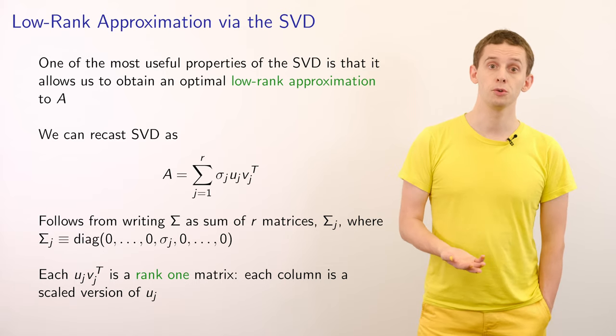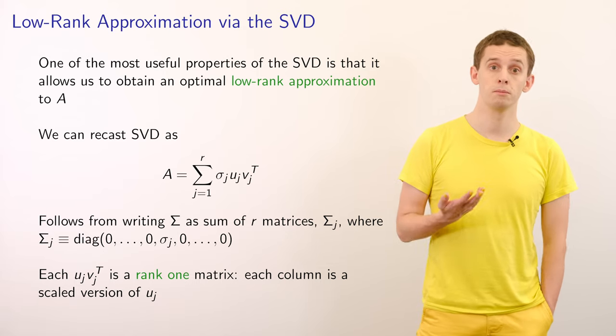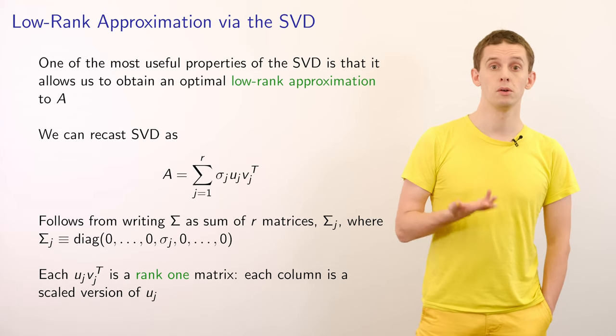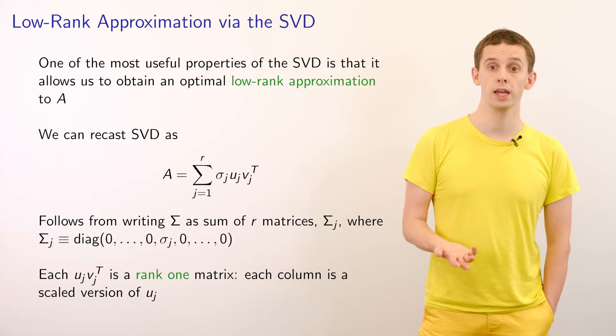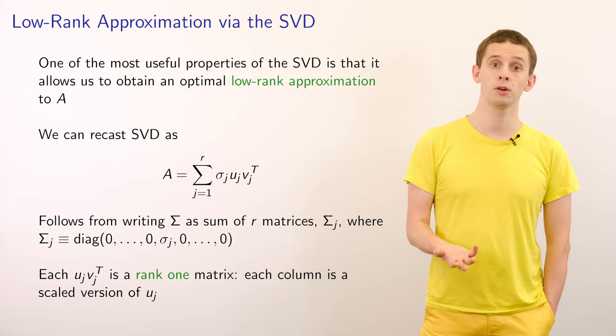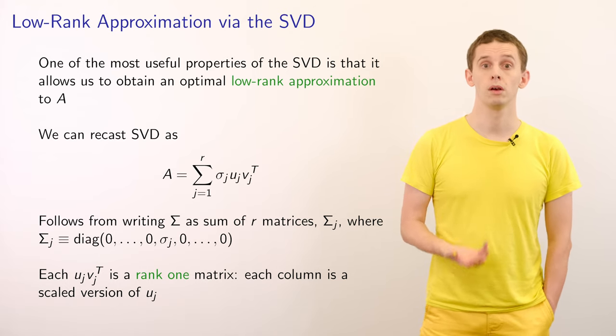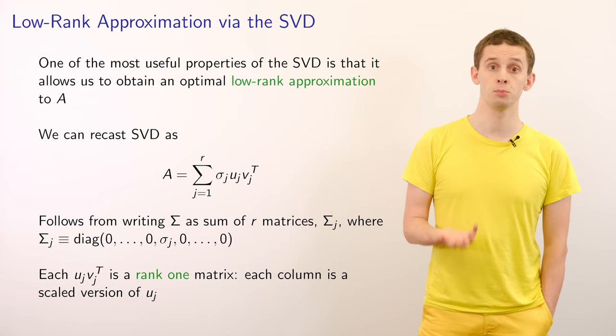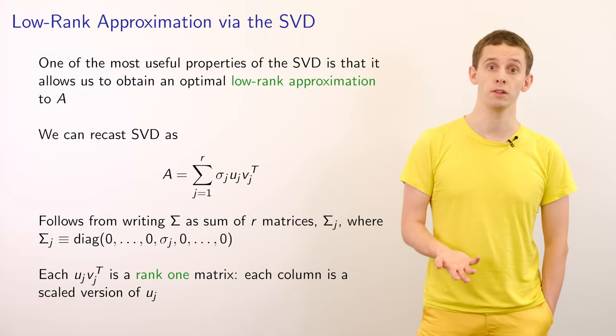And this follows from writing our matrix sigma in terms of the sum of matrices sigma j, where sigma j is defined as a diagonal matrix, but where only the jth singular value is present in the jth row and jth column.